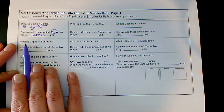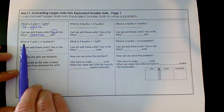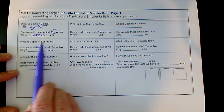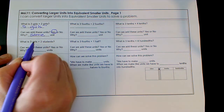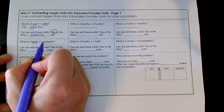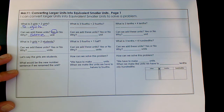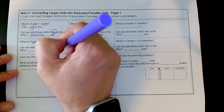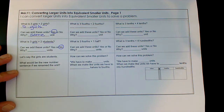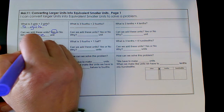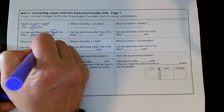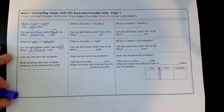Now what if I had this number sentence? What is three girls plus two students? Can we add these units? I have girls — there are three — and then this one is two students. Can we add these units? If you said no, you're right. But why? If you said because they're different, you're correct. It's because they are different units.